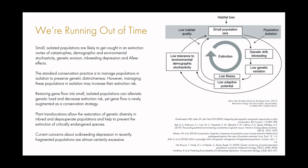We are running out of time. Small isolated populations of plants or animals are likely to get caught in an extinction vortex of catastrophes including genetic erosion, inbreeding depression, and Allee effects. The standard conservation practice in the northeast with regards to plant conservation is to carefully manage populations that are becoming rare or extirpated and to keep them in isolation in order to preserve genetic distinctiveness — this is what people refer to when they talk about local ecotype plants: a type of goldenrod only found in one place that shouldn't be mixed or allowed to hybridize with others.